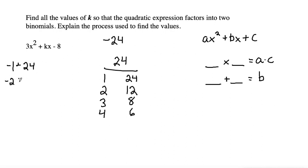Then we could do negative 2 and 12, negative 3 and 8, negative 4 and 6. Then we list the pairs with the first number positive and the second negative: 1 and negative 24, 2 and negative 12, 3 and negative 8, and 4 and negative 6.